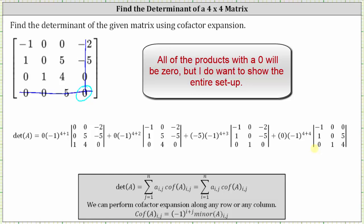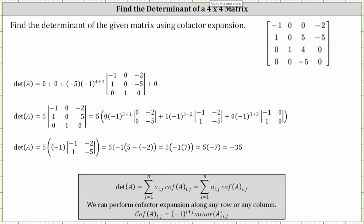The reason we selected row four is because three of these products contain a zero, reducing the amount of work. The first product is zero, the second product is zero, and the fourth product is zero, which gives us zero plus zero plus negative five times negative one raised to the power of four plus three times the three by three determinant plus zero. We can drop the zeros, and since negative five times negative one raised to the power of seven equals positive five, we are left with positive five times the three by three determinant.